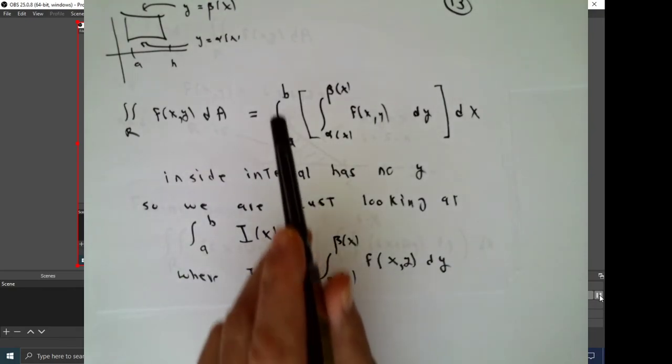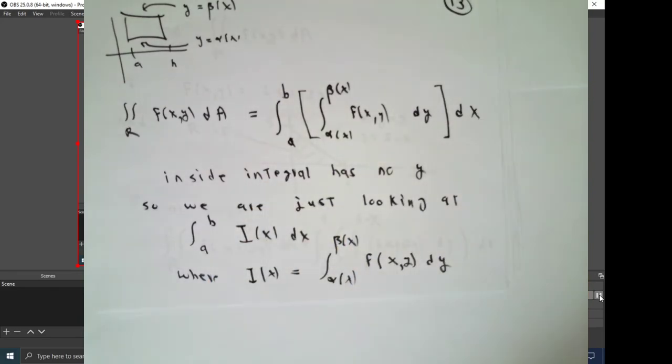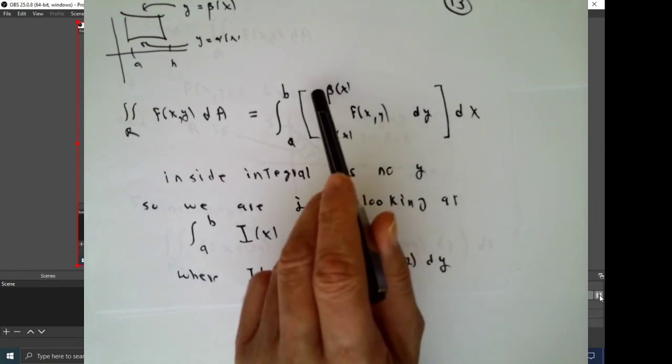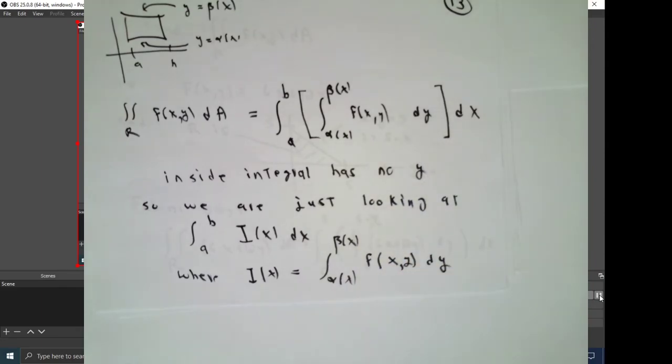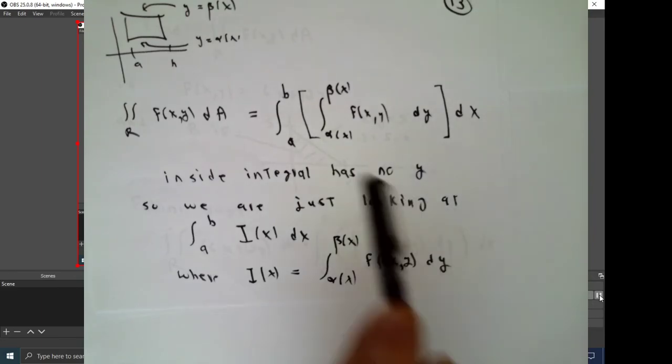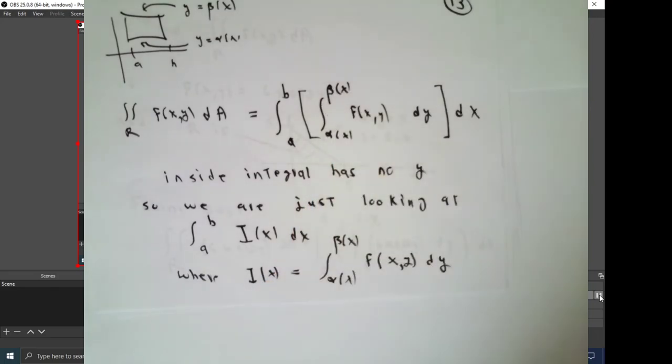You integrate from a to b with respect to x, the integral from alpha of x to beta x, f of x and y, with respect to y only. When we do these integrals, we will do them in the manner that we were just talking about. I can't emphasize enough, this inside integral is with respect to y. After you find an antiderivative, if you can, you will substitute y equal alpha x and y equal beta x in for the y, and in the end, the result still may have x's in it, but it can't have any y's.